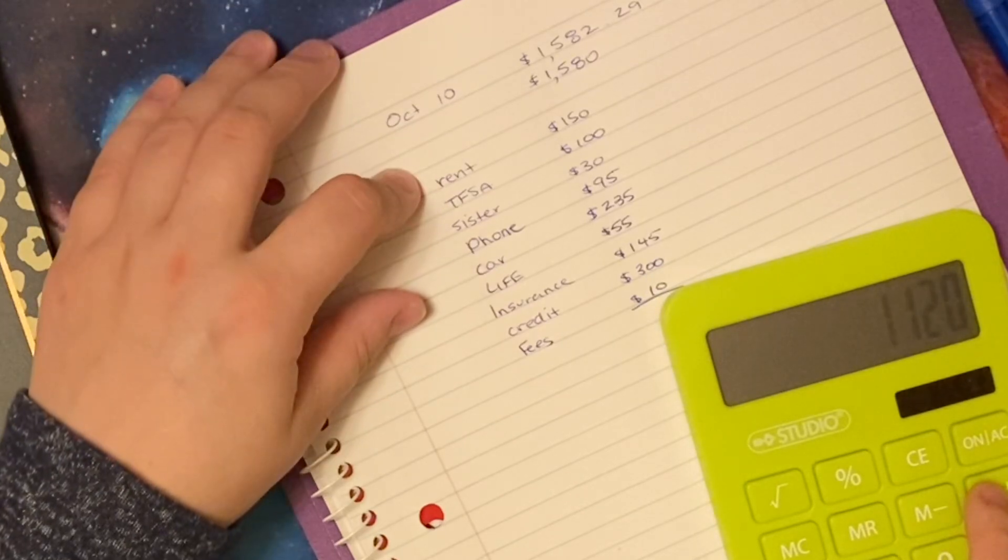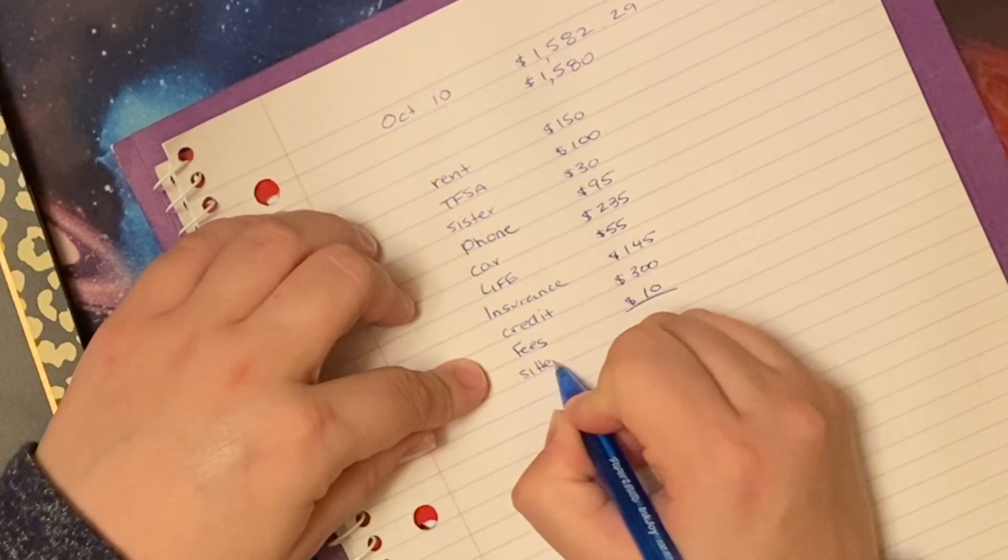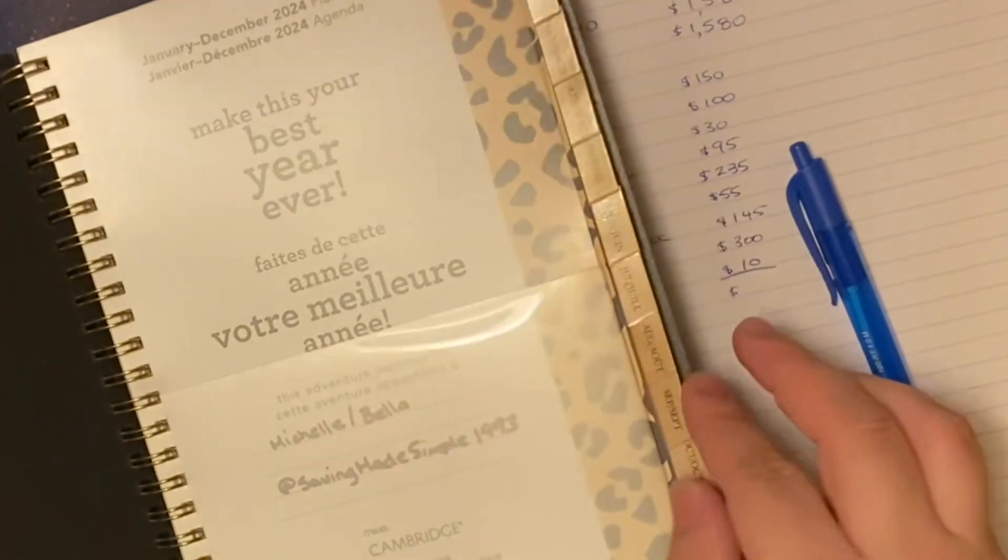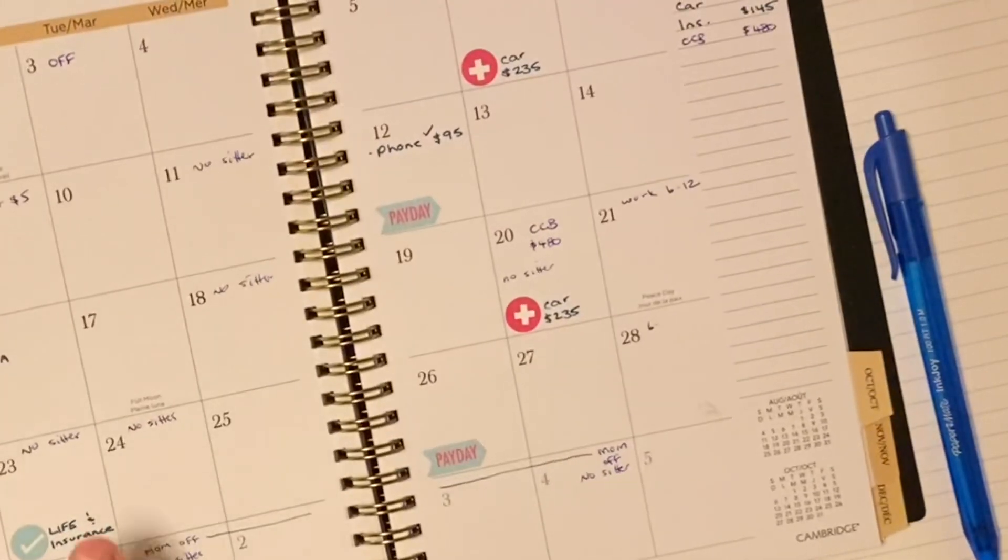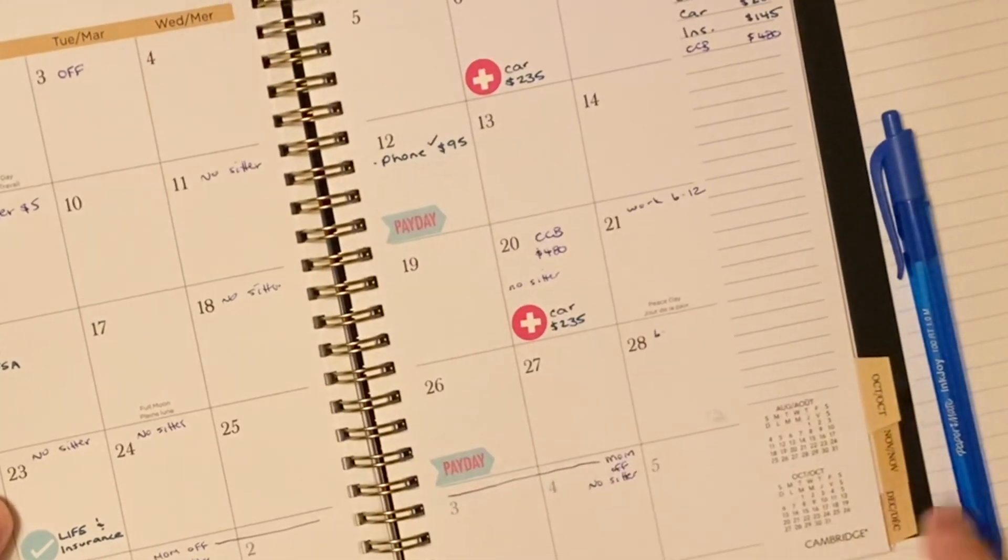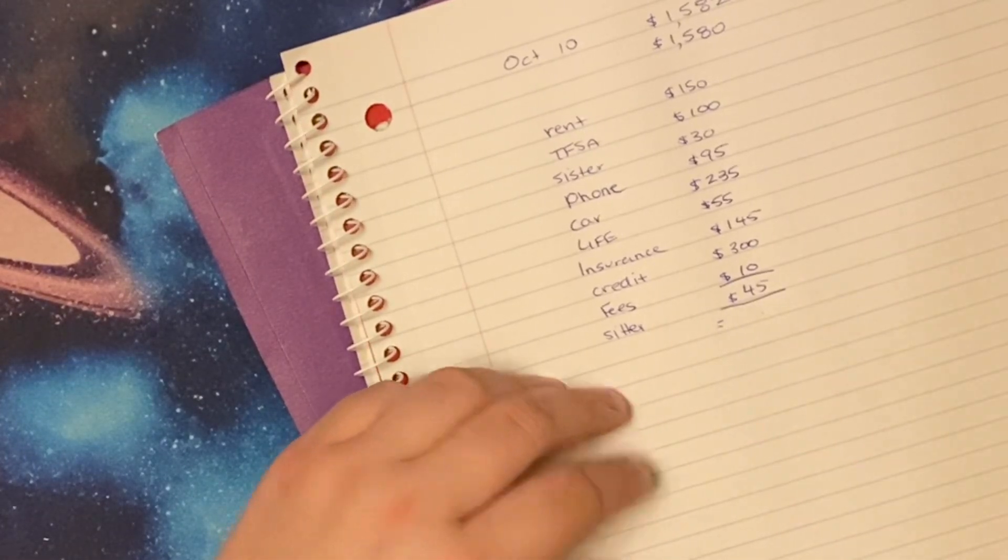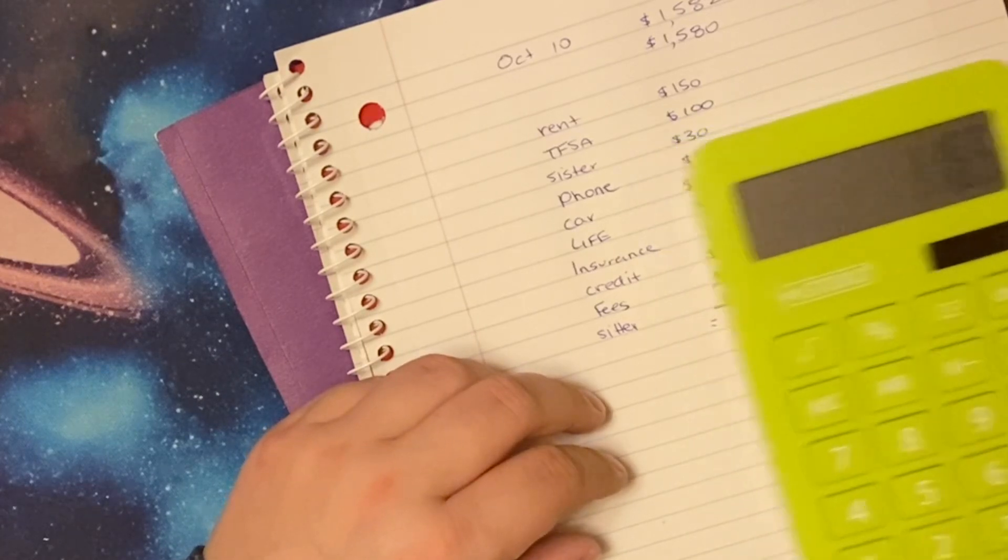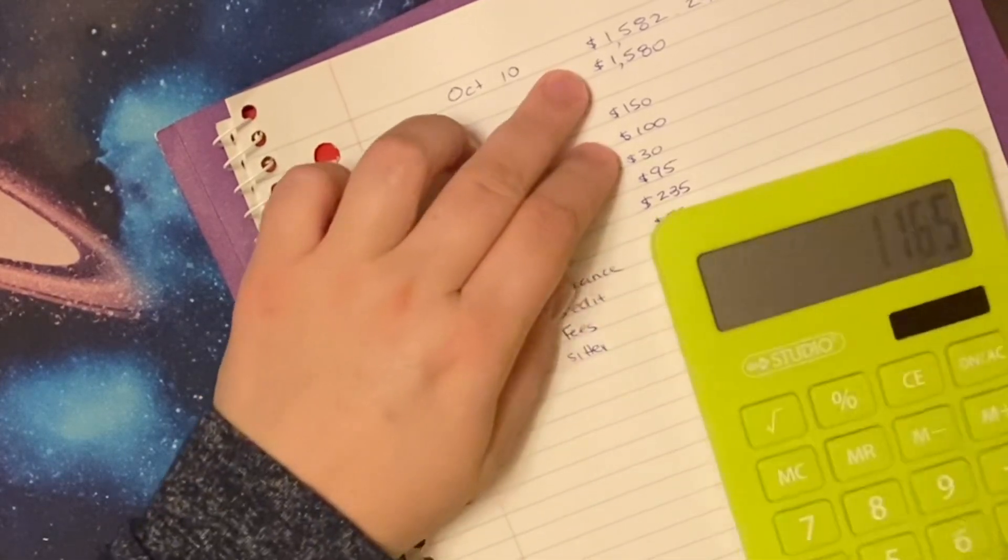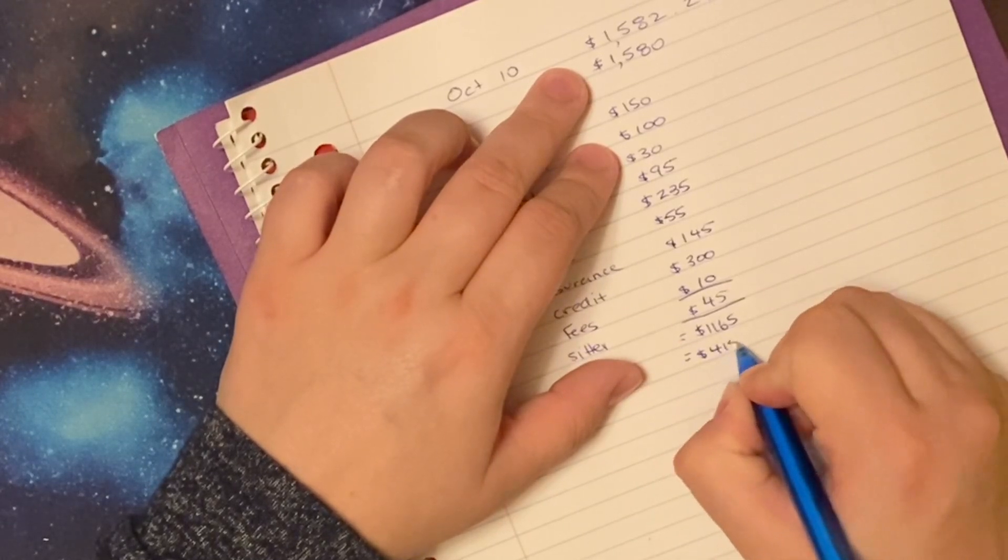I forgot my babysitter. My babysitter: I didn't have her on the 23rd or 24th. Three days times $15 is $45. So we got $1,165 minus $1,580, which means we have $415 to work with.